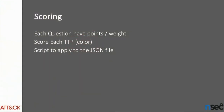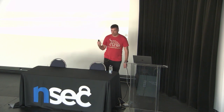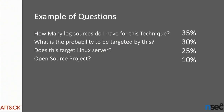Once you have decided on your questions, you need to assign points or weights to every question you've selected, so you can score each TTP and assign them a color in the navigator or another way of tracking. With 244 techniques, doing this manually is quite tedious. This is an example of the questions you might select with weights: how many log sources do I have for this technique — 35% weight? What is the probability to be targeted — 30%? Does this target Linux servers because my DMZ is full of Linux servers — maybe 25%? And is there an open source project that can help speed up detection development — maybe 10%?